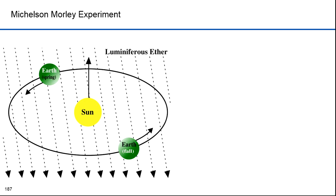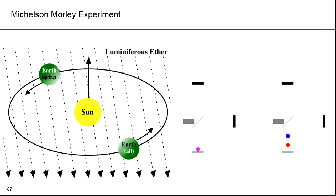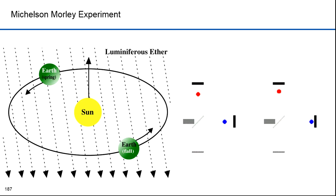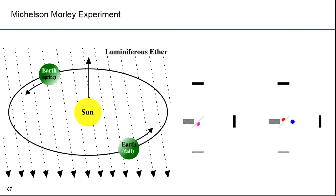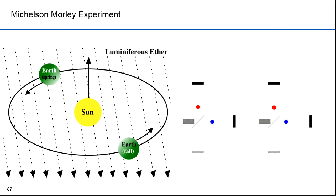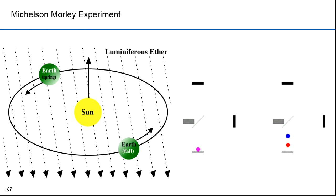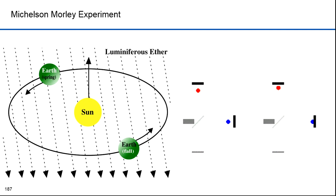Their experiment involved splitting light with half-silvered mirrors and then recombining it. If the apparatus were in motion relative to the ether, the returning light would be different than if at rest. They ran several experiments and always got the same result — the apparatus appeared to always be at rest, no matter what time of year or time of day. This became known as the most famous failed experiment in history. Einstein concluded that standing electromagnetic waves were not possible, and the failed Michelson-Morley experiment settled the issue for him.